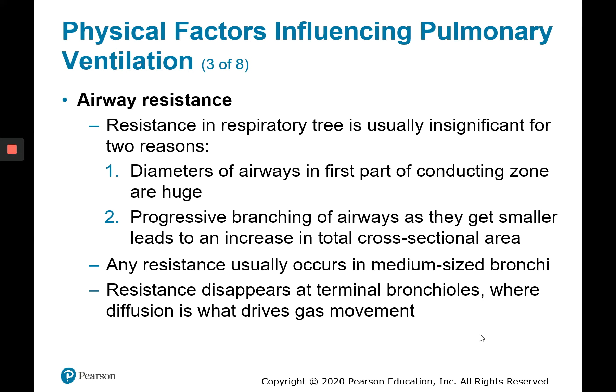Resistance in the respiratory tree is pretty insignificant. The primary, secondary, and even to a small extent the tertiary bronchi have huge diameters. When the bronchi become bronchioles and get smaller, we get tons of branching, and this branching increases the total cross-sectional area. So even though the diameter of the airways gets smaller, we get more of them. We see the most resistance in the medium-sized bronchi, and they don't participate as much in bronchial dilation or constriction.